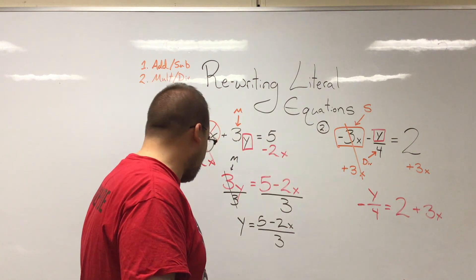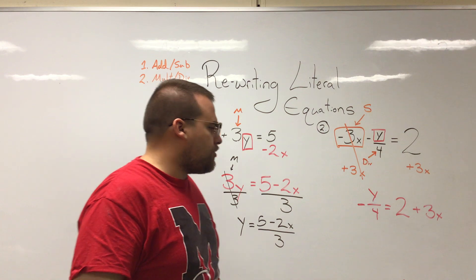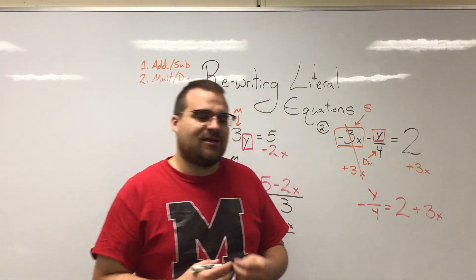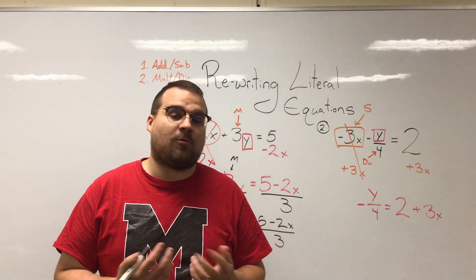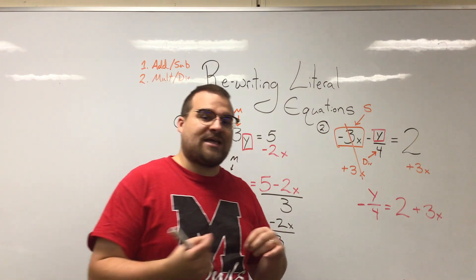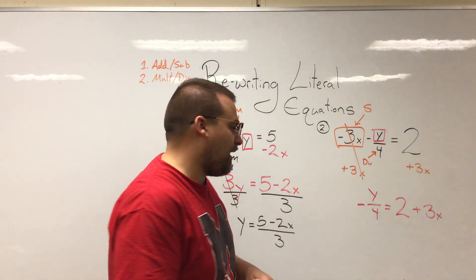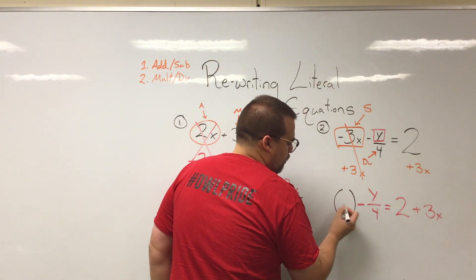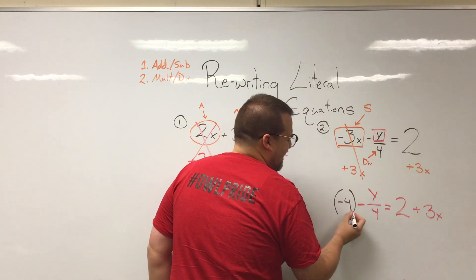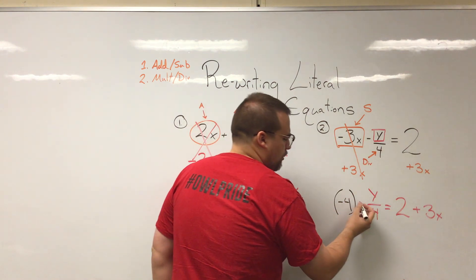Negative y over 4. So what I'm actually going to do is I'm going to consider it a negative 4 that the y is being divided by. So when I do my inverse operation and I multiply to get rid of that number, I'm going to multiply by a negative 4. That'll go ahead and cancel out this whole thing.